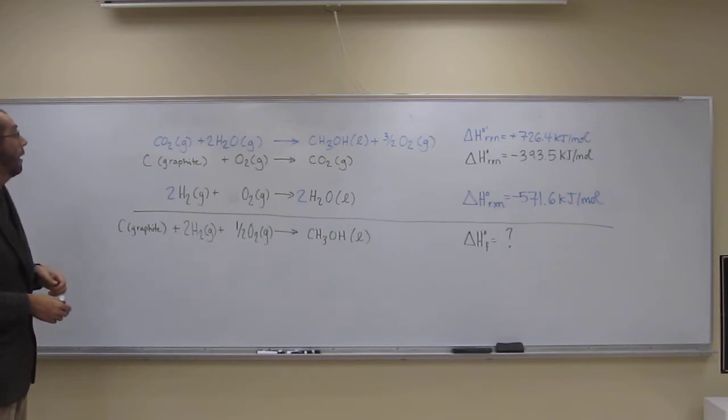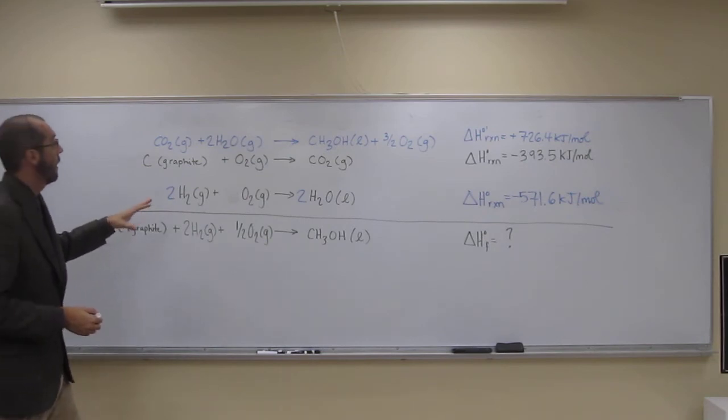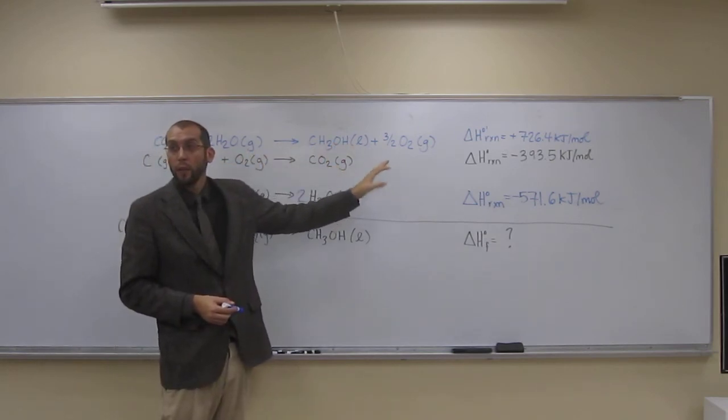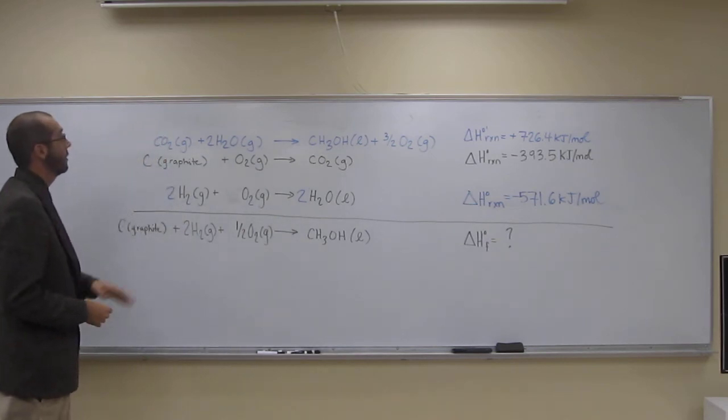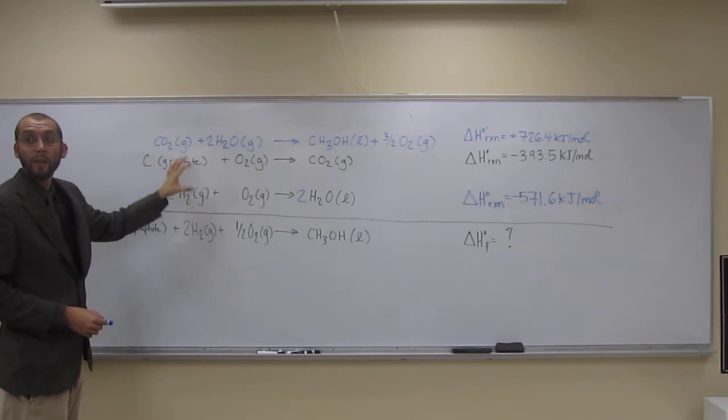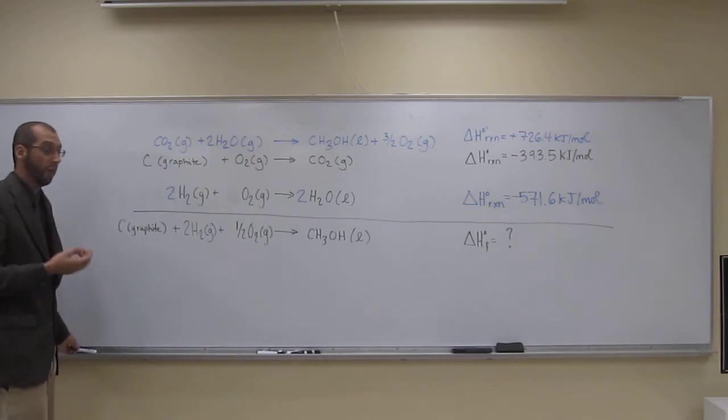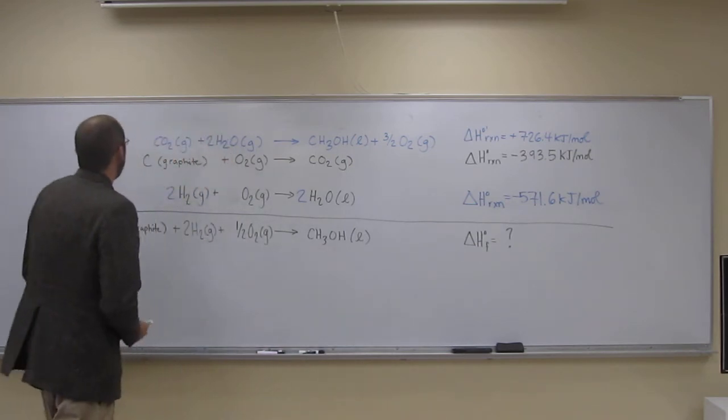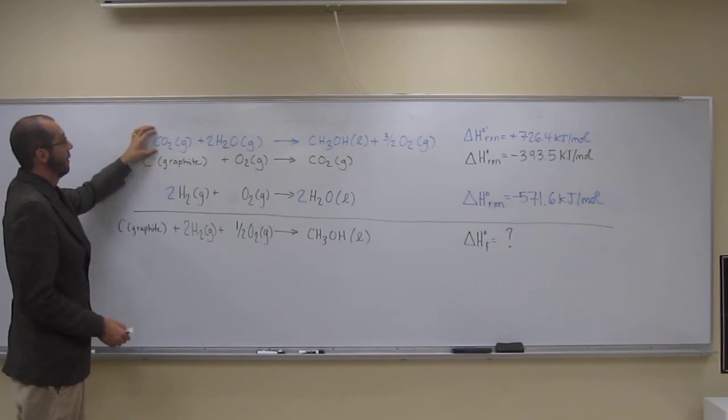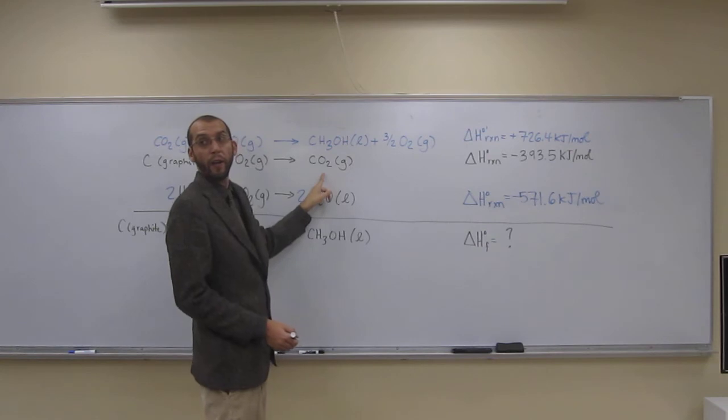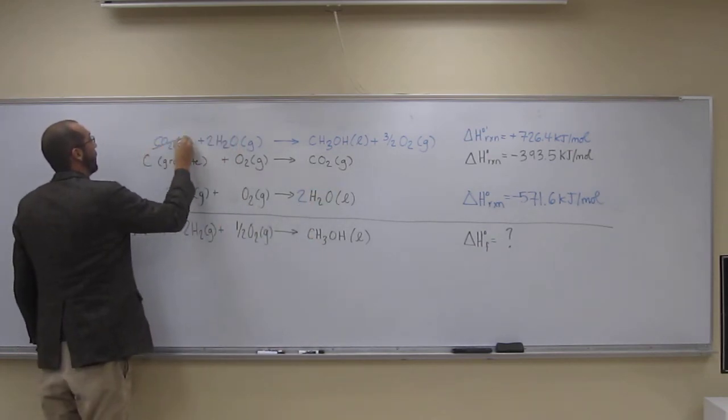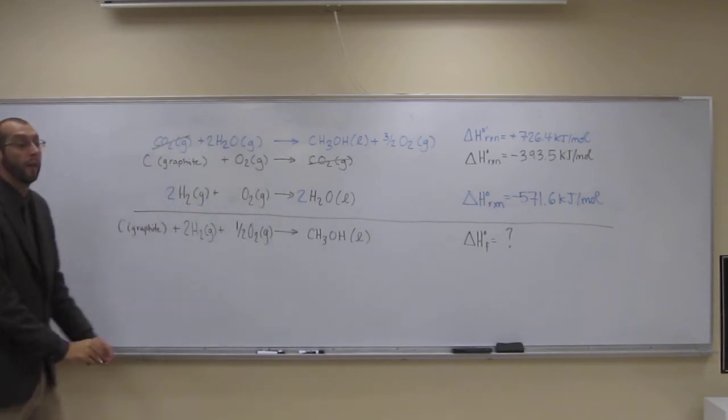So now, all we've got to do is add these things up, and anything that's on both sides of the reaction we cancel out. Just go through every one of the species that you see on each side and see if they're on the other side in the same number of moles or coefficients. Let's start with carbon dioxide. We've got one carbon dioxide on this side of the equation, and we look over here, one carbon dioxide. So those are going to cancel.